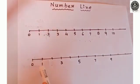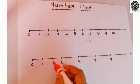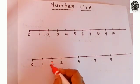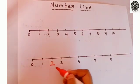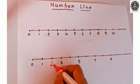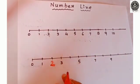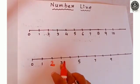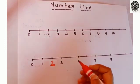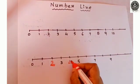0, 1, no number. Here, 3. What is the between number of 1 and 3? Yes, children? Very good. That is 2. Now tell me, what is the between number of 3 and 5? Yes, number 4.